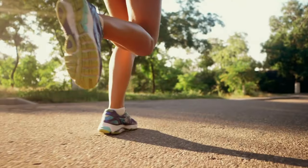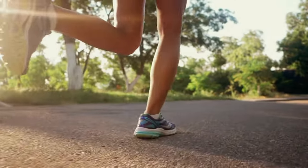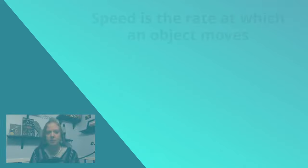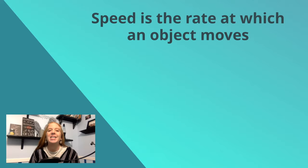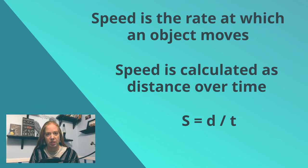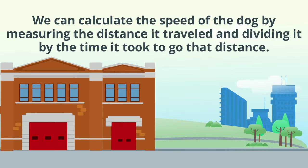Now that you know about reference points, can you tell how fast something is moving? Speed is the rate at which an object moves. Speed is calculated as distance over time, or s equals d over t. We can calculate the speed of the dog by measuring the distance it traveled and dividing it by the time it took to go that distance.